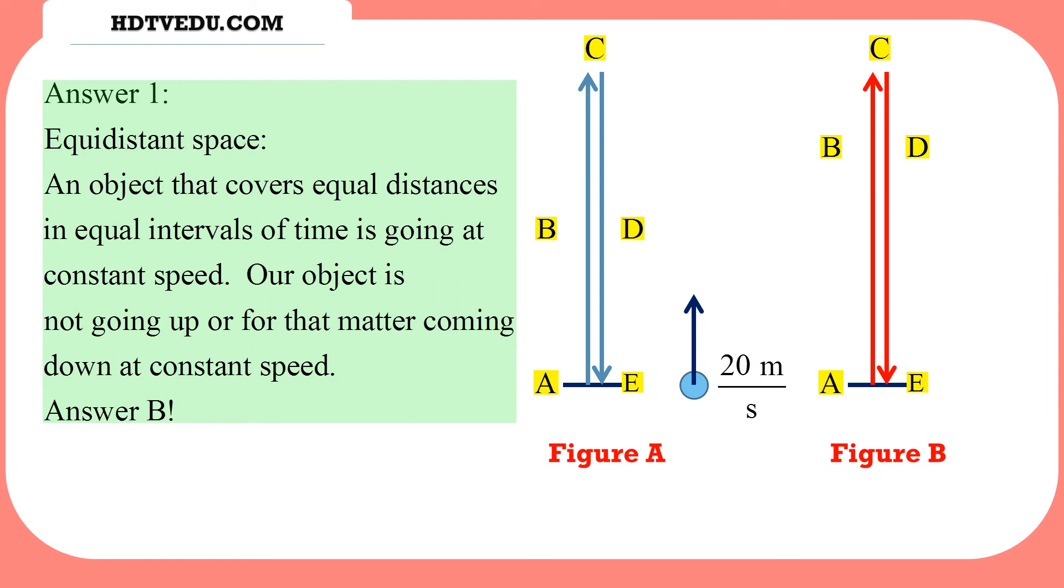Answer: an object that covers equal distances in equal intervals of time is going at constant speed. Our object is not going up or coming down at constant speed. Our object is accelerating. There is no air resistance, only the pull of the Earth. So when an object accelerates, it covers unequal distances in equal intervals of time if we are looking at vertical motion.